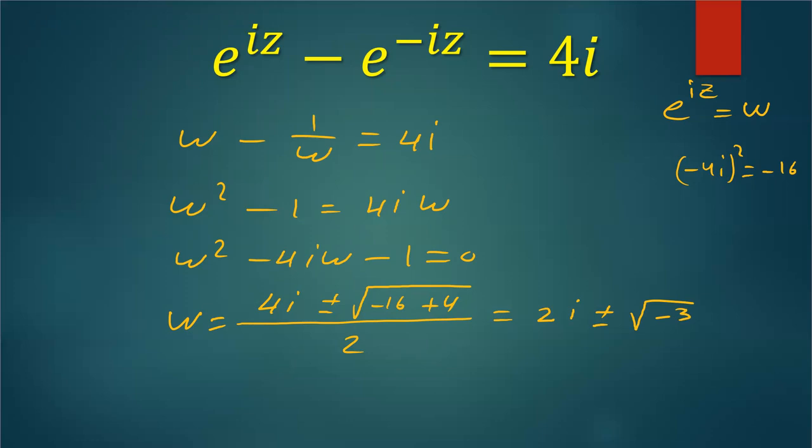√(-3) in complex numbers equals ±i√3, which can be written as i with a coefficient of 2 ± √3. What is that? It's w. What is w? w is e^(iz). So I end at this part: e^(iz) = i(2 ± √3). This is an imaginary number, no real part in fact.